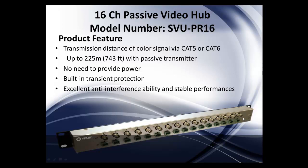The 16-channel passive video hub, model number SVU-PR16, transmits color signal via Cat5 or Cat6 up to 225 meters — 743 feet — with a passive transmitter. No need for power, built-in protection, excellent anti-interference ability, and stable performance. You can also mix an active receiver with the passive hub to achieve greater distances.